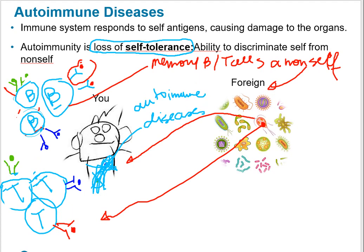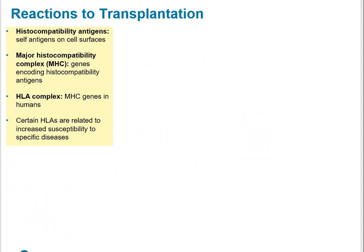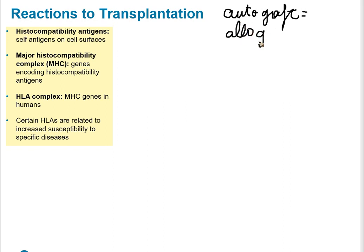Now I want to tell you a little bit about reactions to transplantation. When I call something an autograft, that means it's a transplant from a person to the same person. For example, you take a piece of skin from your leg to fill another part of the body, or a piece of tissue from your mouth to fill your gums. That would be an autograft — graft means the transplanted tissue. If you have an allograft, that's a transplantation from one person to another.